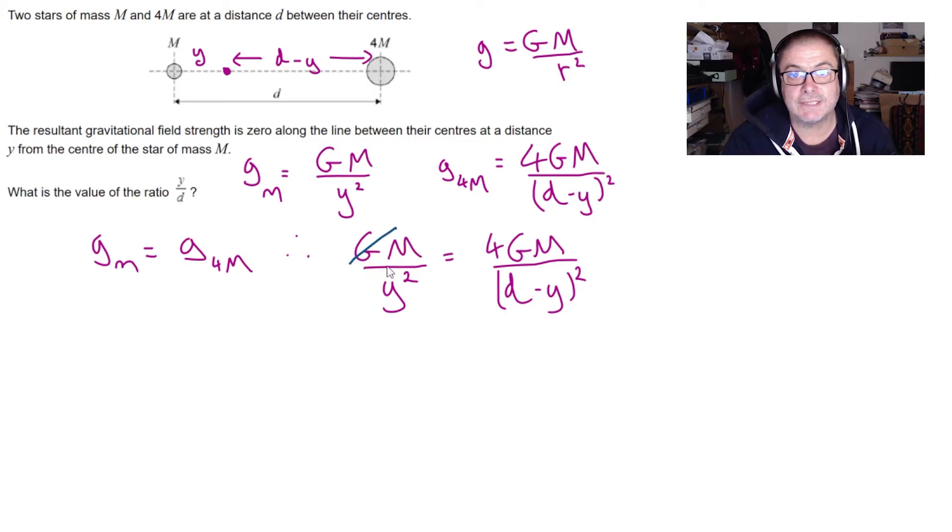Now let's cancel out those things which are common to both sides, i.e. the universal constant and the capital M for mass. And that'll leave us with 1 over y squared equals 4 over d minus y all squared.